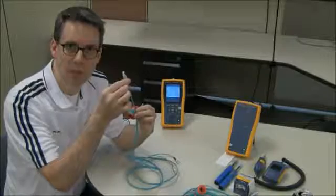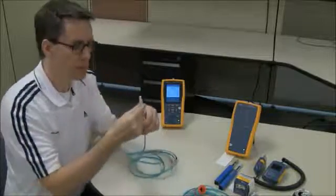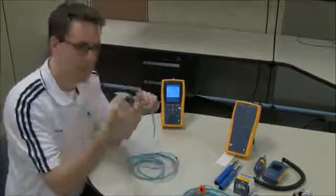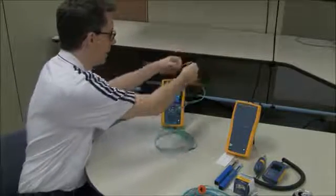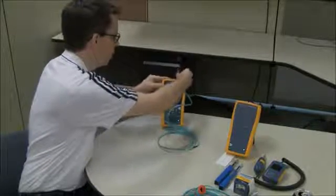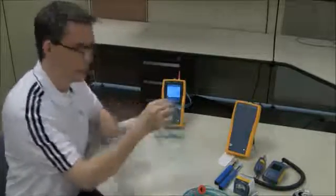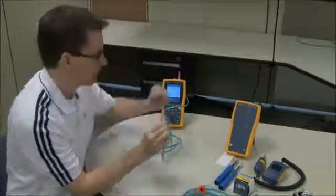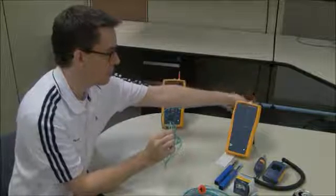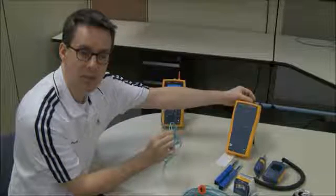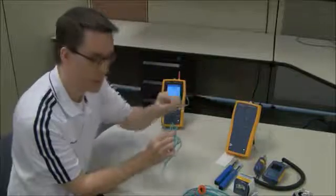The way this works is we take our red SC connector and connect it to the output port on the main unit. Then, not through a bulkhead adapter, I'm going to connect it directly to the input port on the remote unit, and because this is LC now, I can do that.